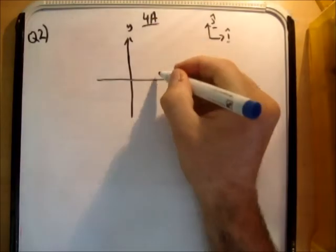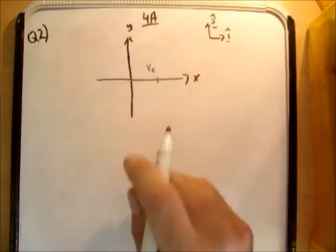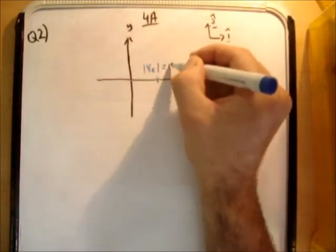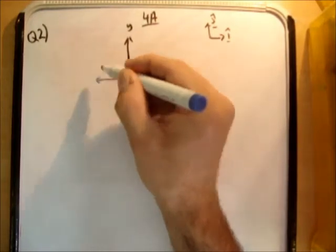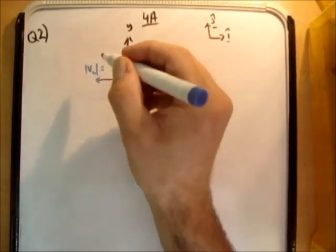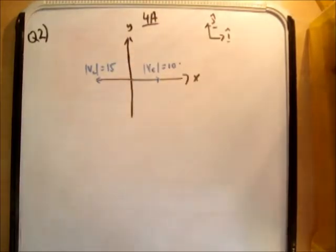So I'll say that this here is the velocity of my cyclist, and that was equal to the magnitude of which was equal to 10. Here we have the velocity of the lorry, the magnitude of which was equal to 15.